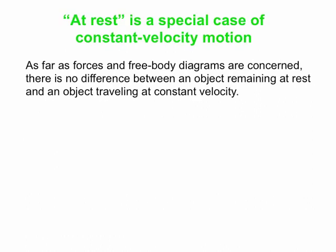Just to hammer home this idea: we think of at rest being one thing and moving being something different. But at rest is actually a special case of constant velocity motion. It's constant velocity, staying at rest - it's just velocity with v equals zero. As far as forces and free body diagrams are concerned, there's absolutely no difference at all between an object that remains at rest and an object that travels at constant velocity.